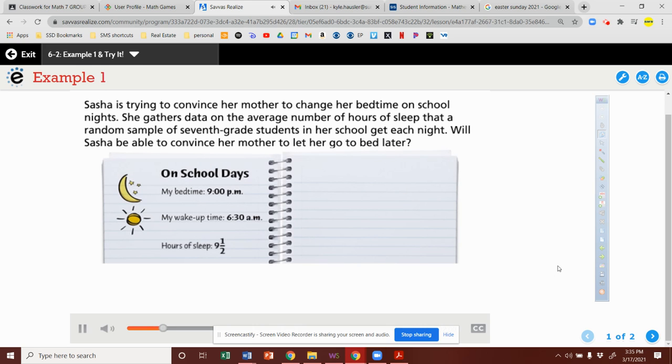Sasha is trying to convince her mother to change her bedtime on school nights. She gathers data on the average number of hours of sleep that a random sample of 7th grade students in her school get each night. Will Sasha be able to convince her mother to let her go to bed later?